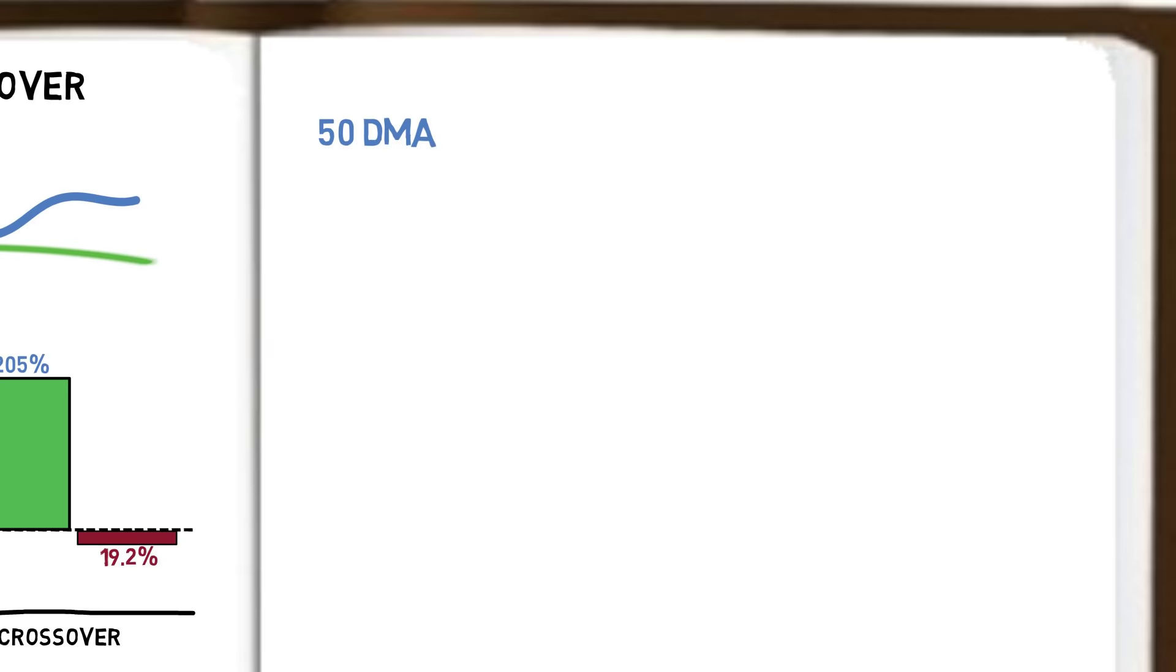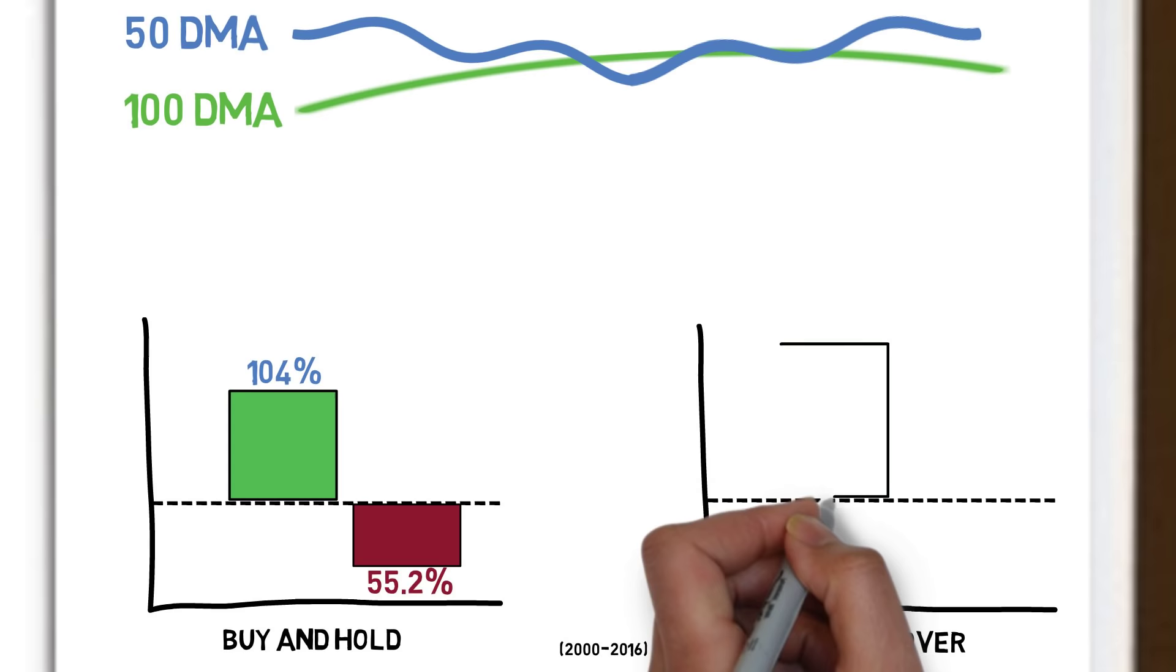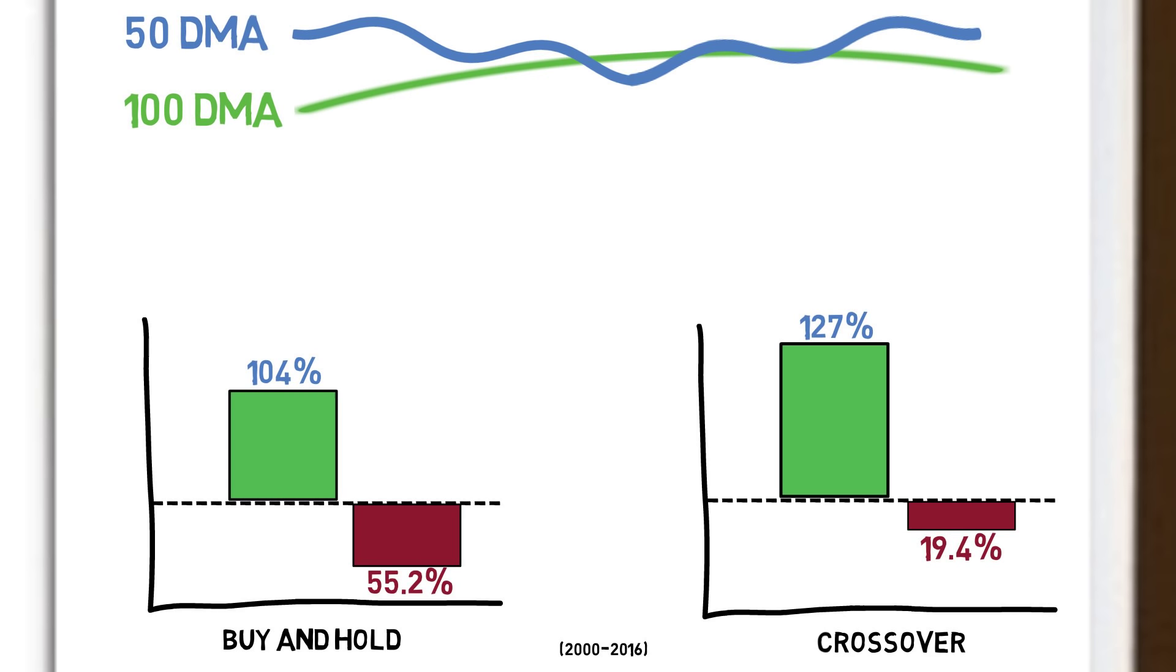The returns of buy and hold from the point of the first crossover signal accrued to 104%. The maximum drawdown was once again 55.2%. The crossover system achieved a return of 127% against a maximum drawdown of 19.4%. Again, continuing the theme of minimising risk.